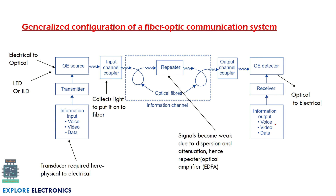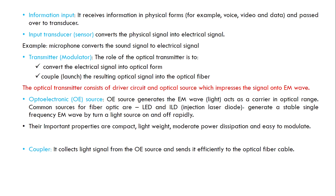This is how communication happens through optical fiber, as shown in the block diagram. Each block can be explained as follows: the information input — usually voice, audio, or data — is given to the transducer for conversion into an electrical signal. Once the electrical signal is available, it is converted into a light signal by the modulator and the optoelectric source. The optoelectric source generates electromagnetic waves, i.e., light, which acts as the carrier signal in optical fiber communication. The devices used to generate light are LED or ILD.